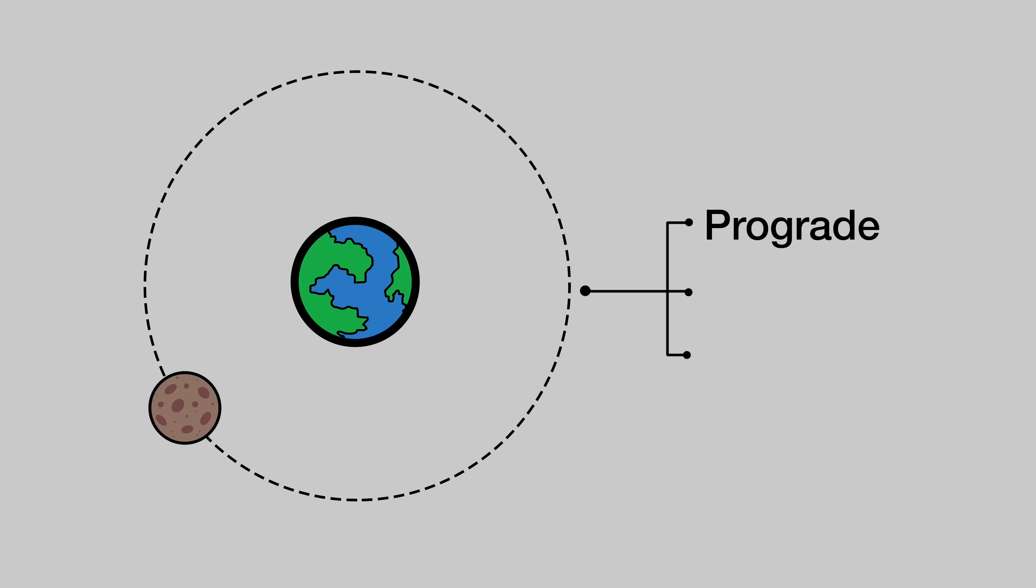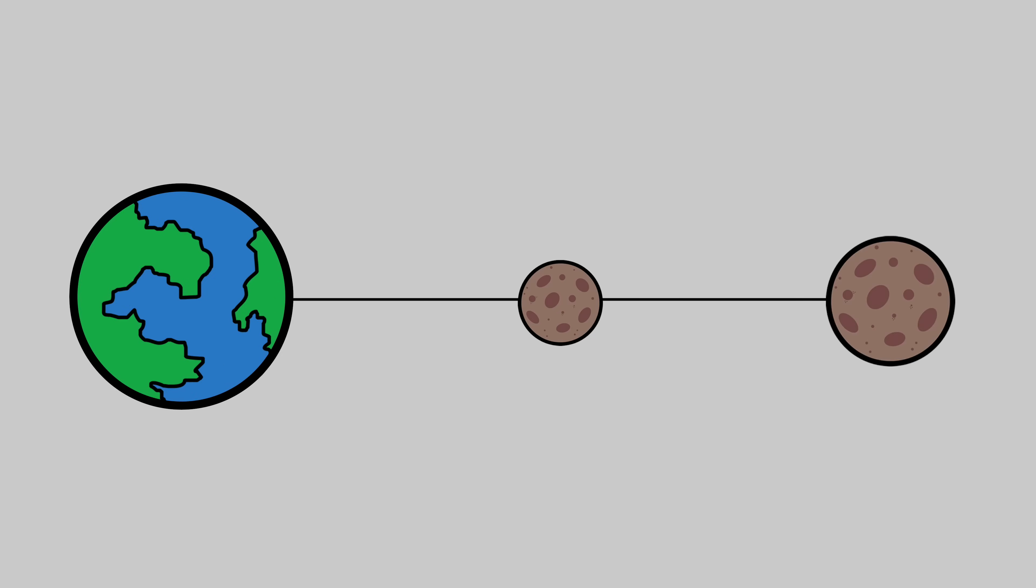I'll give it a prograde orbit, a very low inclination, say 2 degrees, and a very low eccentricity, about 0.01. Oh, and for those wishing to construct two separate major moons, ensure that they never come within 10 planetary radii of each other.